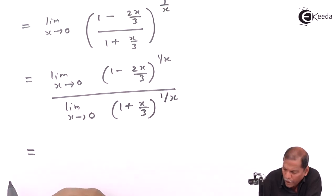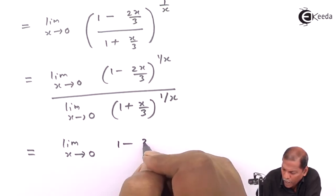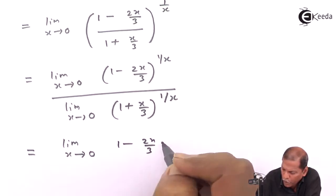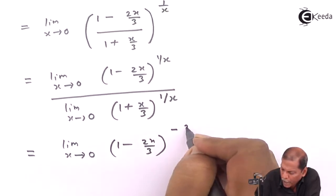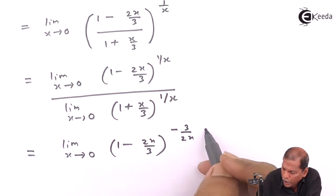Now adjusting the limit in terms of the rule. Limit x tends to 0, (1 minus 2x upon 3), its reciprocal is minus 3 upon 2x.